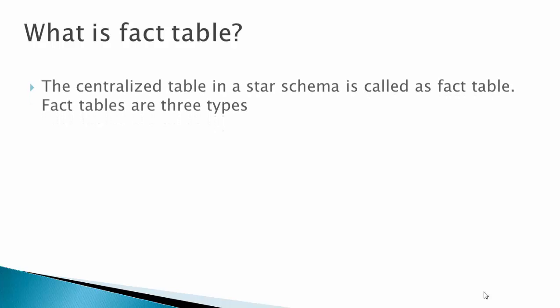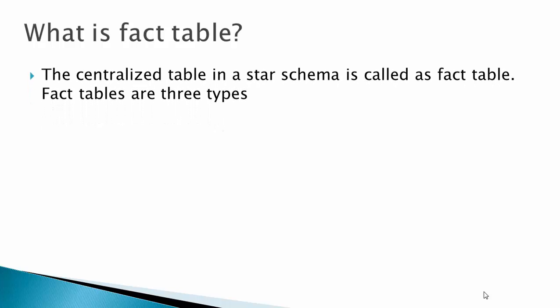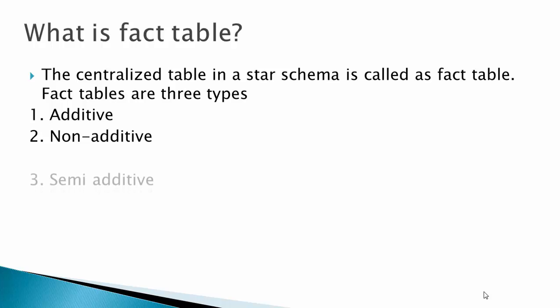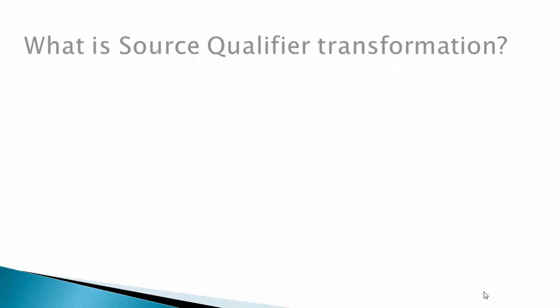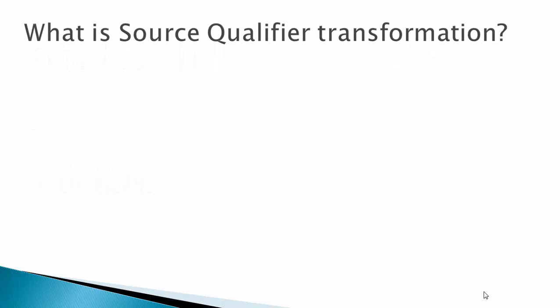What is a fact table? The centralized table in a star schema is called a fact table. Fact tables are of three types: additive, non-additive, and semi-additive.